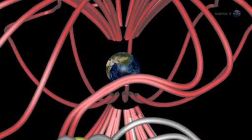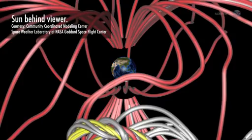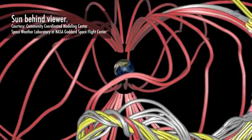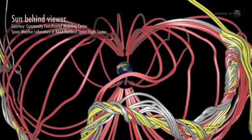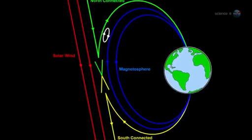Actually, there are signposts. And Scudder has found them. Portals form via the process of magnetic reconnection. Mingling lines of magnetic force from the Sun and Earth crisscross and join to create the openings.